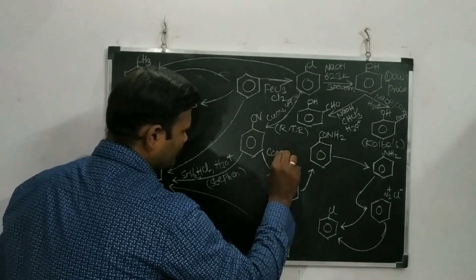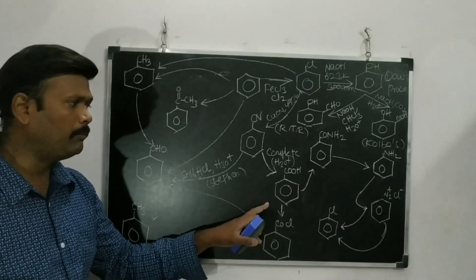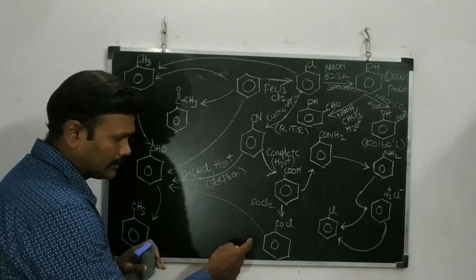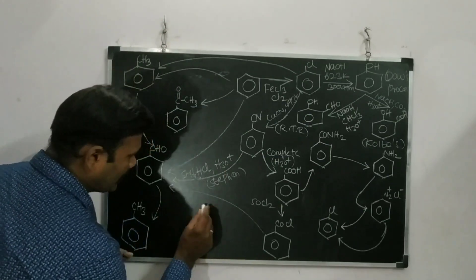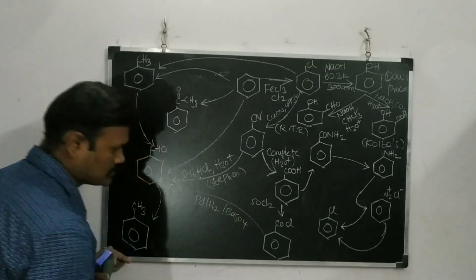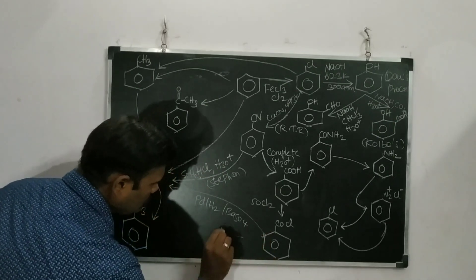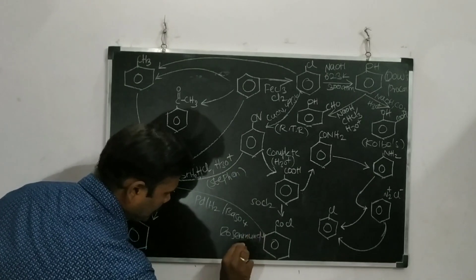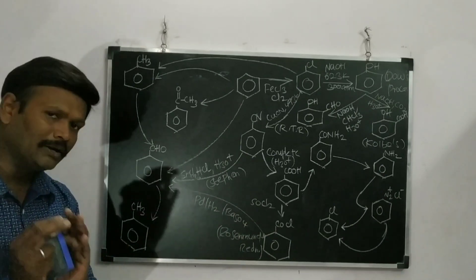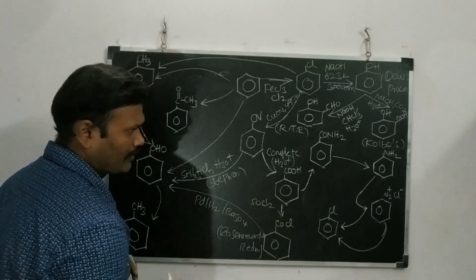From cyanobenzene, complete hydrolysis gives benzoic acid as the product. Benzoic acid is then reacted with SOCl2 to give the acid chloride (–COCl). The acid chloride is then reduced using palladium and hydrogen with barium sulfate catalyst followed by hydrolysis. This reaction is called the Rosenmund reduction — converting –COCl to –CHO.